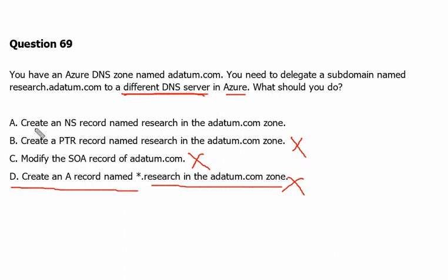Option A is to create a name server record, or NS record, named research in the adatum.com zone. This looks correct. The name server record can be used to delegate a subdomain to a different DNS server in Azure. Therefore, option A is the correct answer.